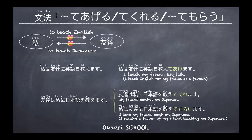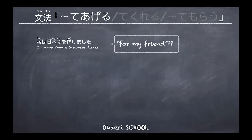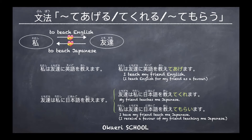My friend teaches me Japanese — receiving the favor. The third: watashi wa tomodachi ni nihongo wo oshiete moraimasu — I have my friend teach me Japanese, or I receive the favor of my friend teaching me Japanese. So there are these three differences: the favor going from me to the friend, or from the friend to me.